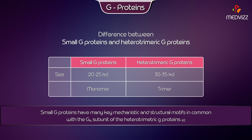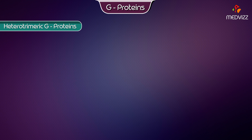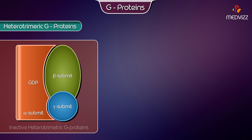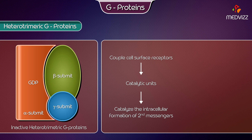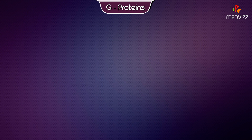Small G-Proteins share many key mechanistic and structural motifs in common with the G-alpha subunit of Heterotrimeric G-Proteins. The larger Heterotrimeric G-Proteins couple cell surface receptors to catalytic units that catalyze the intracellular formation of second messengers, or couple the receptors directly to ion channels.